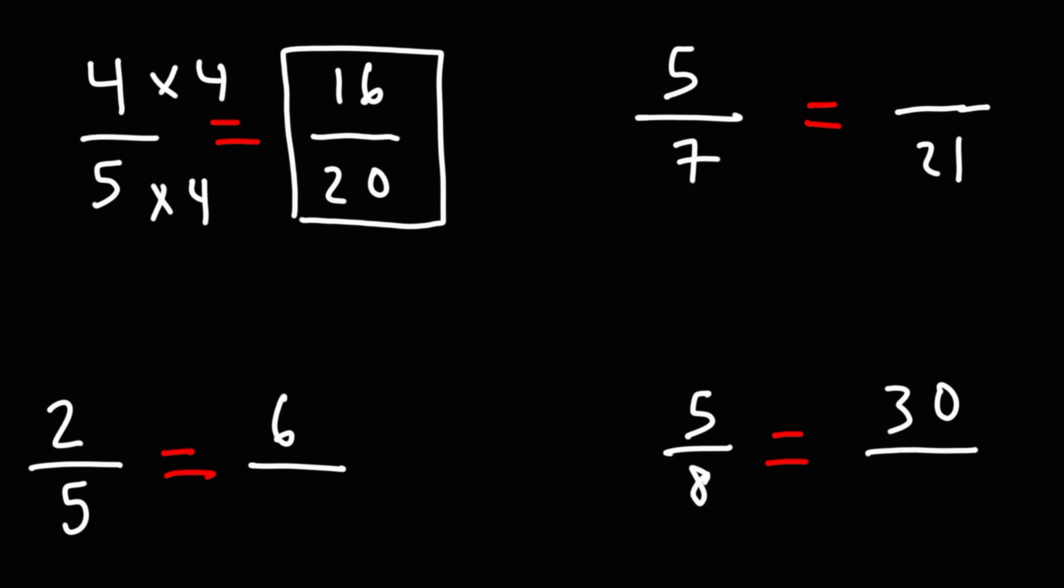Now let's do the same thing for the second example. 21 divided by 7 is 3, so to get 21 from 7 we need to multiply by 3. And let's do the same for the top: 7 times 3 is 21, and 15 times 3 is 15. So this is the answer: 15 over 21.